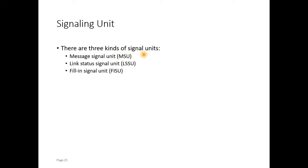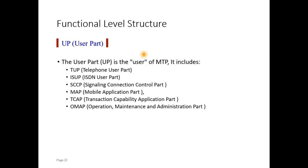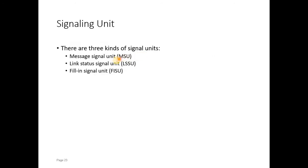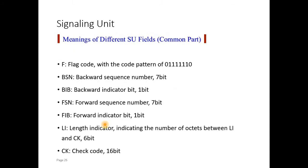There are three kinds of signaling units that the message transfer part carries. Those are called the message signaling units (MSU), link status signaling units (LSSU), and fill-in signal units (FISU). The message signaling unit comprises one structure, the link status signaling unit comprises another, and the fill-in signal unit has its own structure.